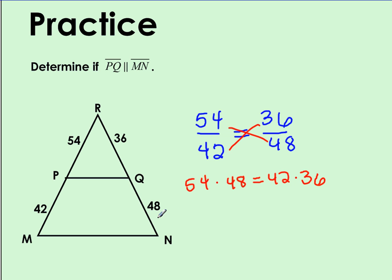54 times 48 will result in 2,592. And when I multiply 42 times 36, the product is 1,512. And these are not equal to one another. So we will say that PQ is not parallel to MN.